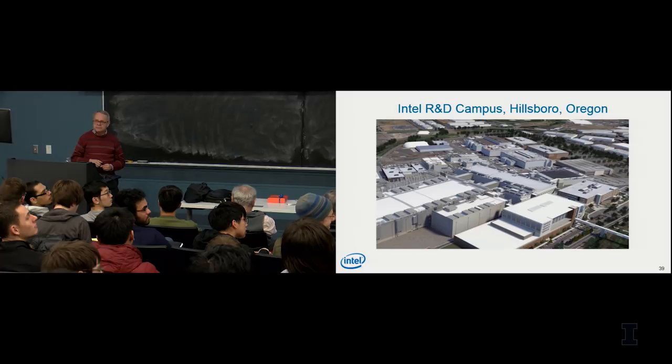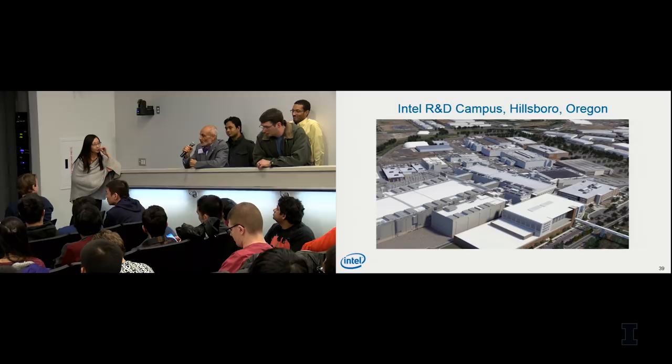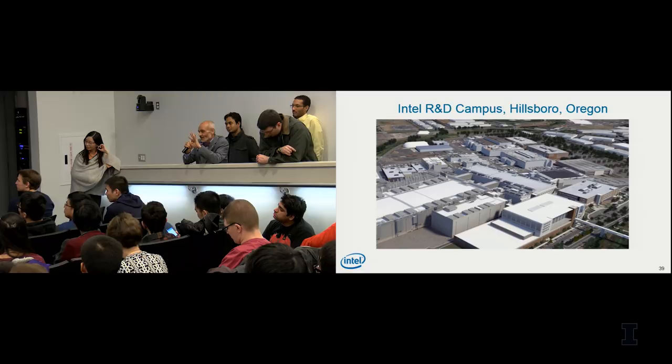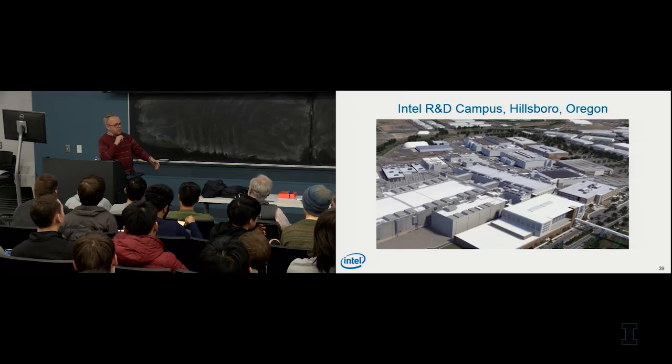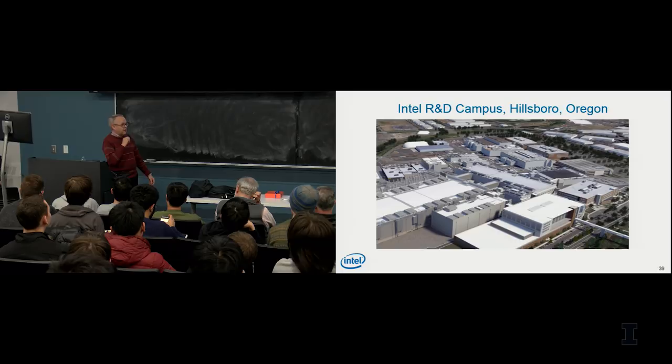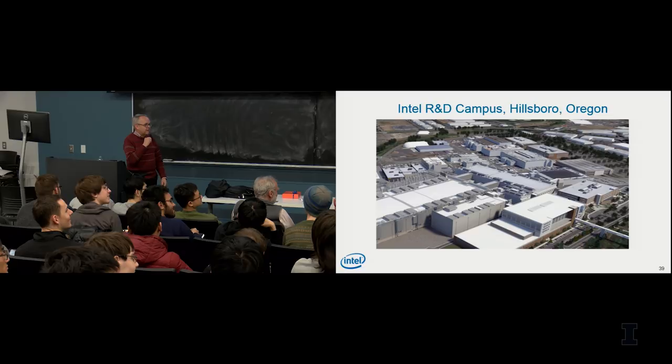Q: From generation to generation, are process variations remaining about the same, getting worse, or getting better? I've gotten that question every 10 years for the last 30 years and somehow we always managed to get it to work. I would say it's about the same proportionally.